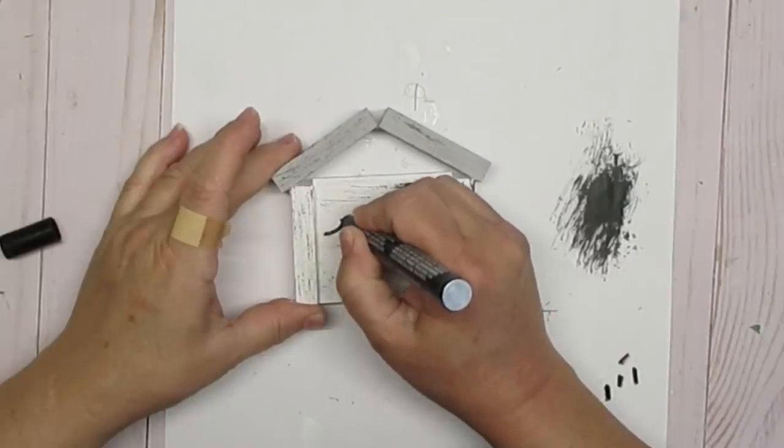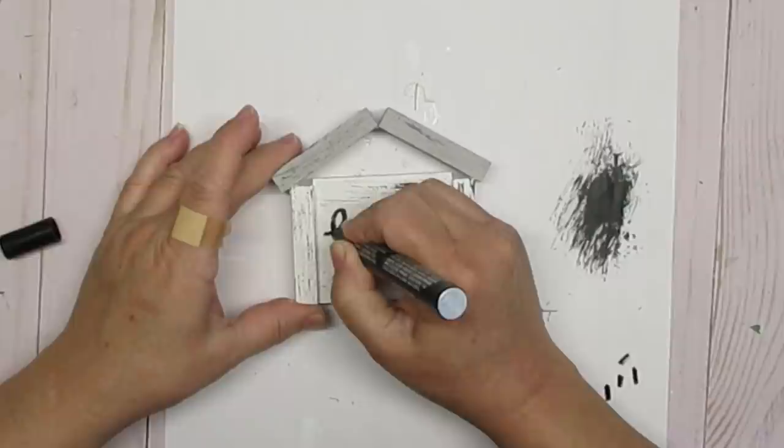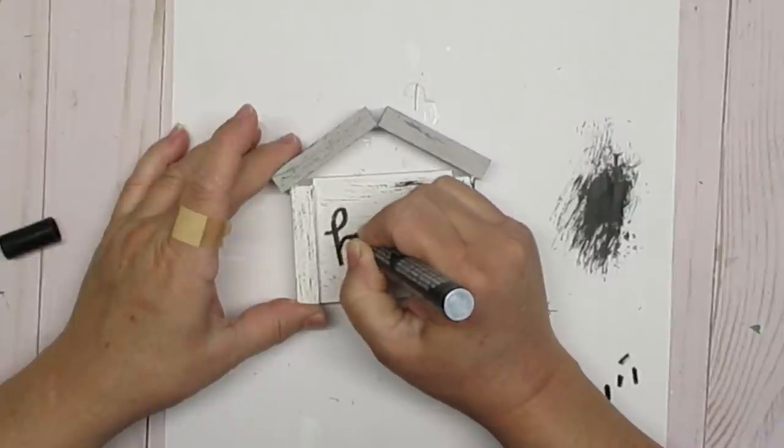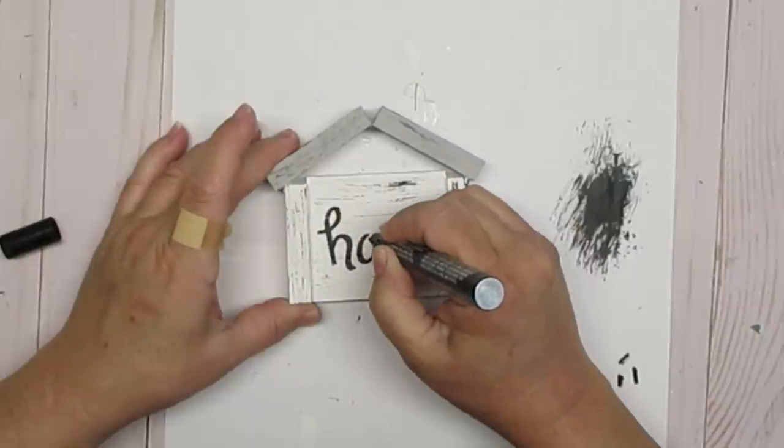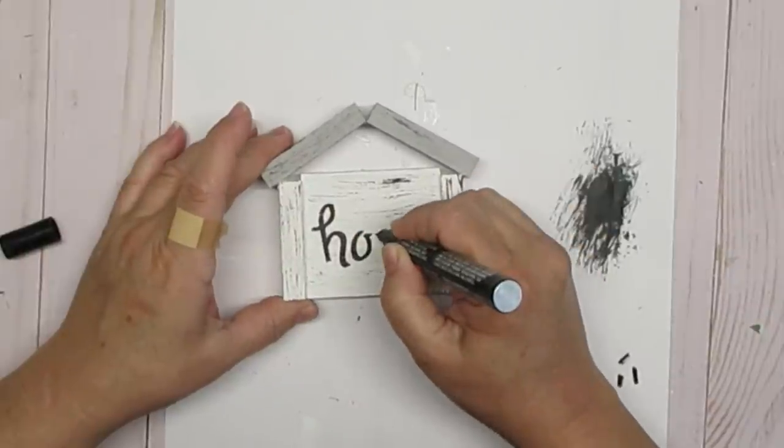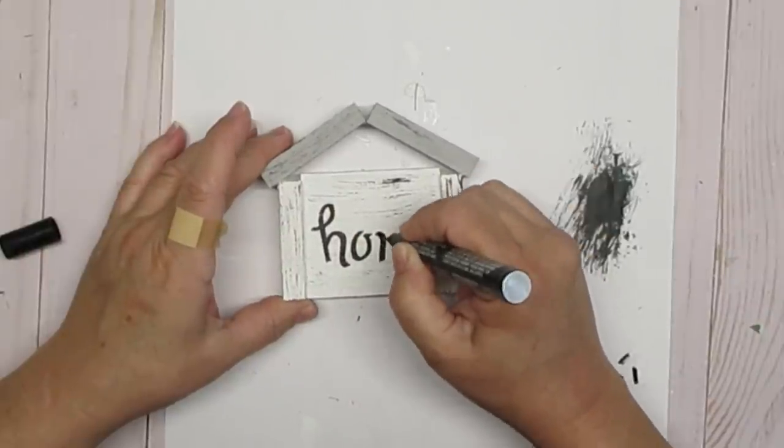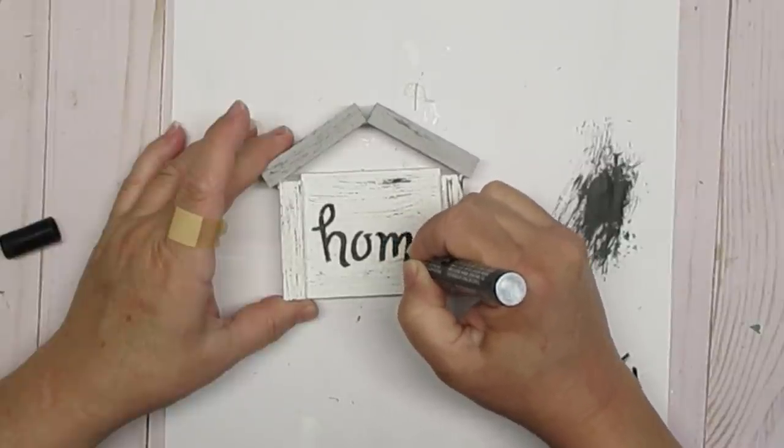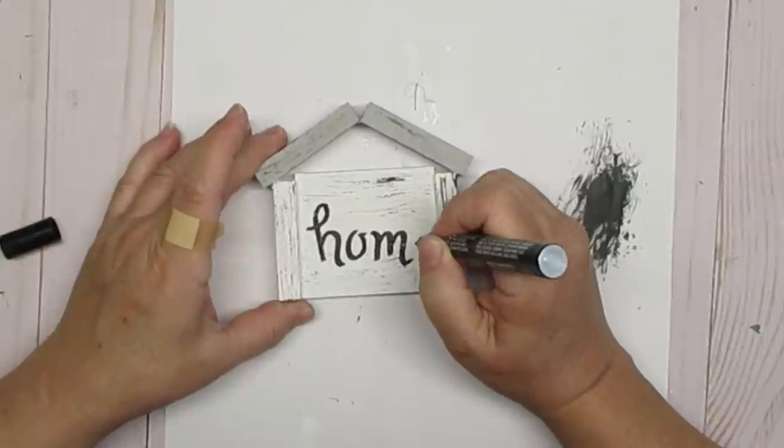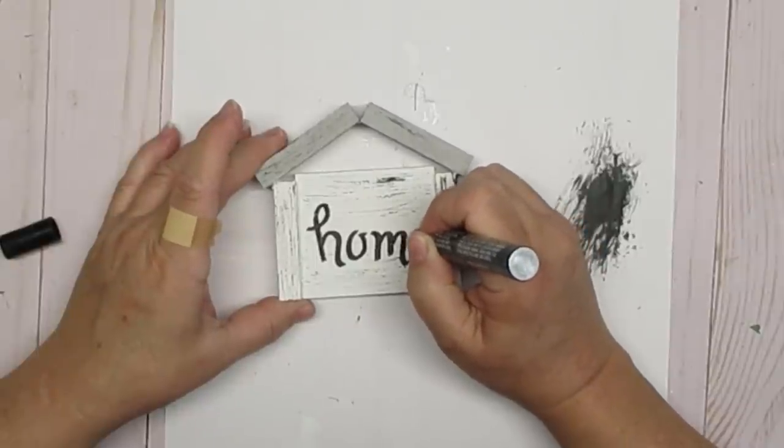Since this is a little sign that's going to be going on a tiered tray I decided to make it double-sided. So I'm going to use my Craftsmart oil-based pen and write the word home on the front and farmhouse on the back. If you don't want to hand write this you can by all means use some stickers or a stencil or even a Cricut.